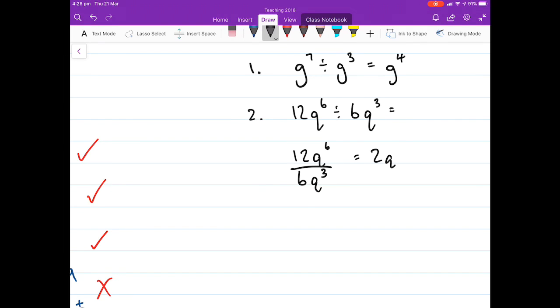3 minus 6. Which is? It's 3. 6 minus 3 is 3. Cool. 2q to the power of 3.